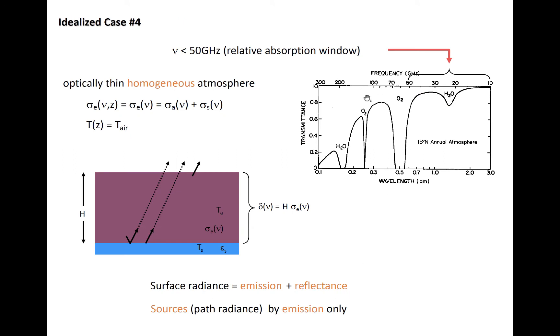In the top right panel, frequencies associated with corresponding wavelengths on the bottom axis are shown along the x-axis. Between roughly 10 and 50 GHz, the atmosphere is relatively optically thin. So let's suppose for an idealized case, in one of these optically thin regions, we have a homogenous single layer atmosphere with some temperature. The surface radiance is that from emission by the surface and reflectance, and then sources along the path include emissions only from the atmosphere.